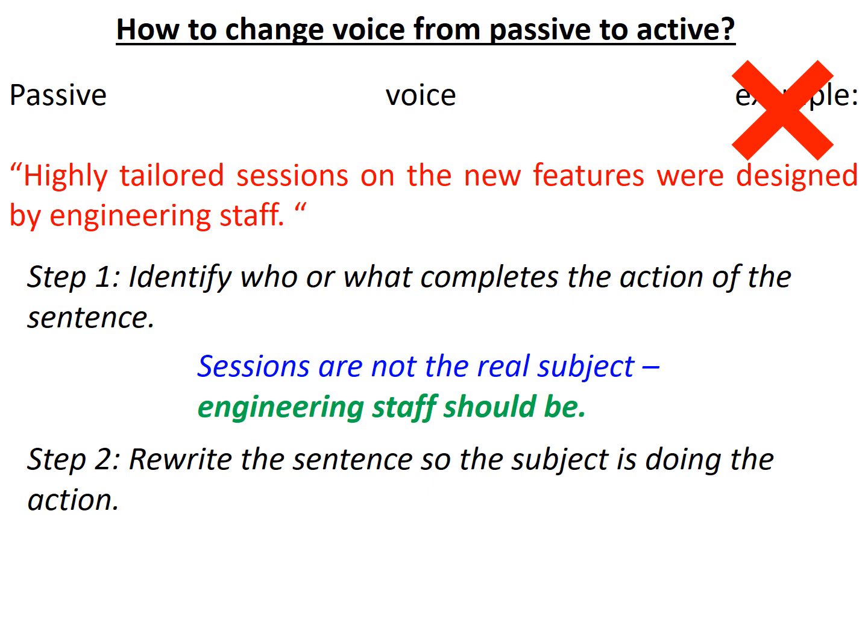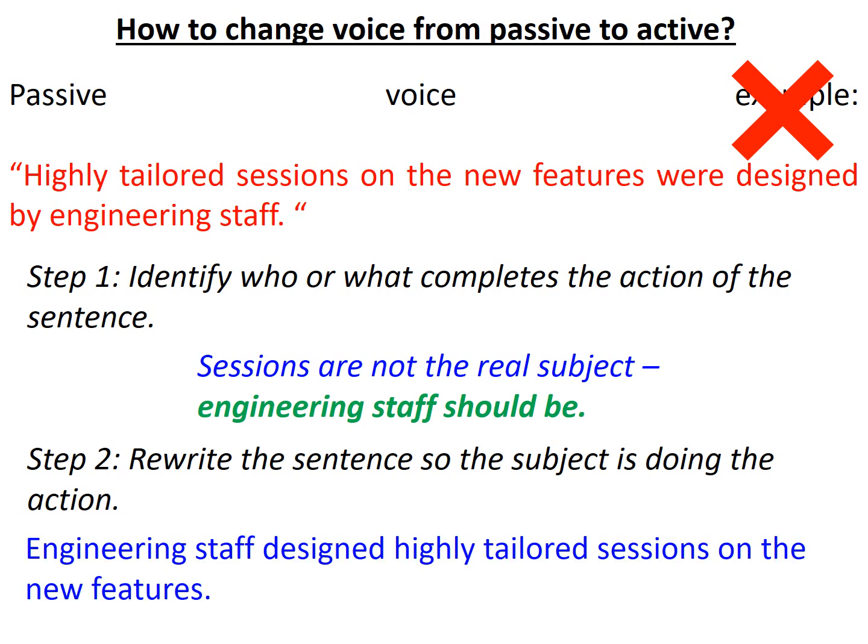So instead of ending with the engineering staff, I could say something like this: 'Engineering staff designed highly tailored sessions on the new features.' The biggest focal point here that makes this sentence active is the fact that I put the engineering staff — the genuine subject of the sentence — at the start, because they are responsible for the action that happens in the sentence. They designed the highly tailored sessions on the new features. That is what makes this new sentence active.